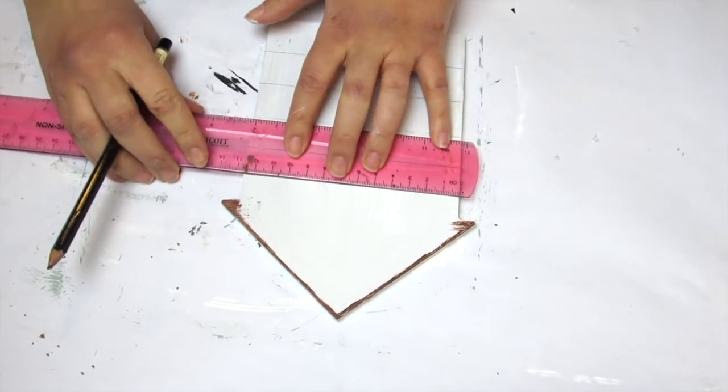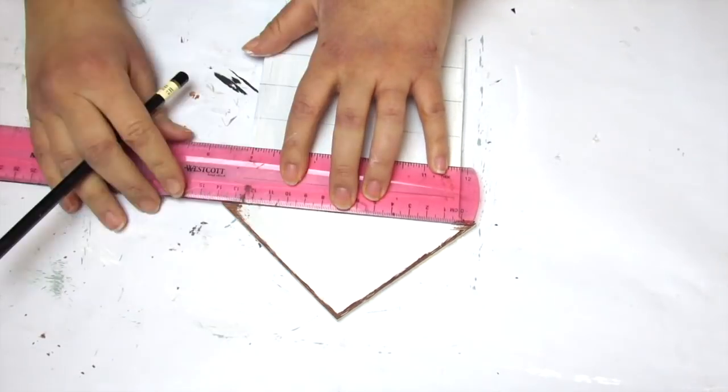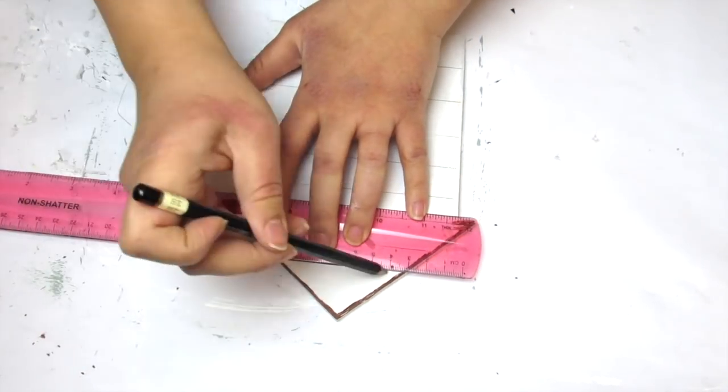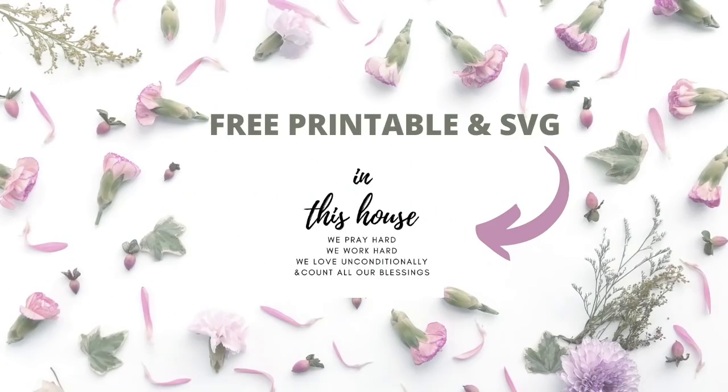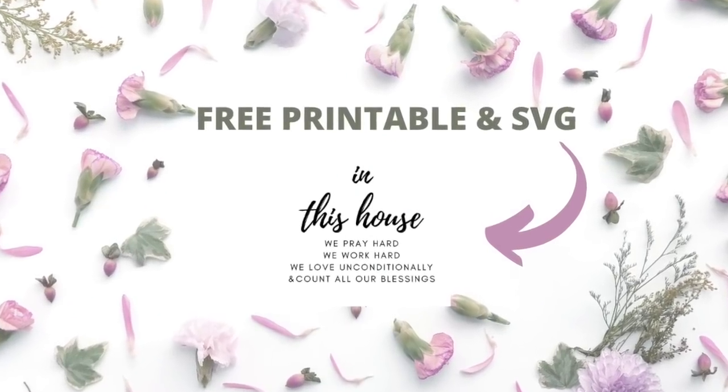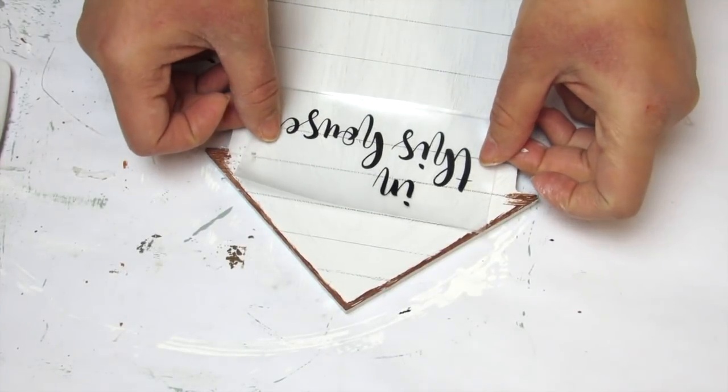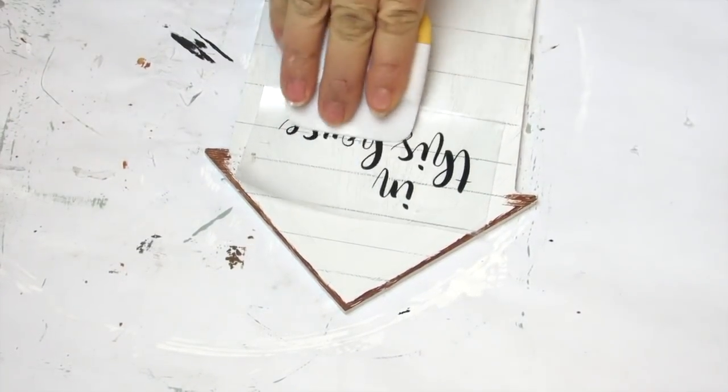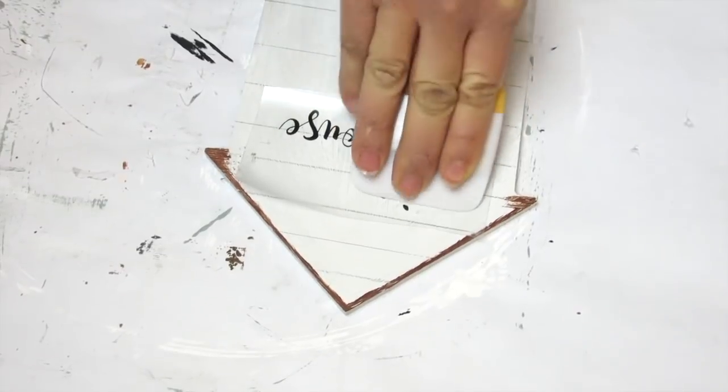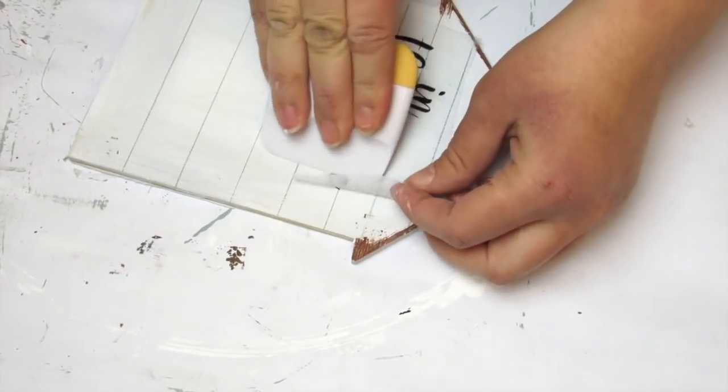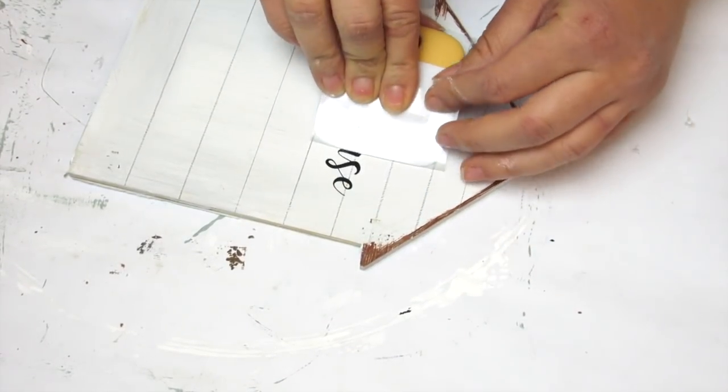And once all that paint is dry, taking a ruler and a pencil and making some shiplap lines all throughout. I kind of eyeballed this but I think they're about like a half inch apart, so I try to make them as even as possible. I also have a free printable and an SVG file for this image down in the description box.